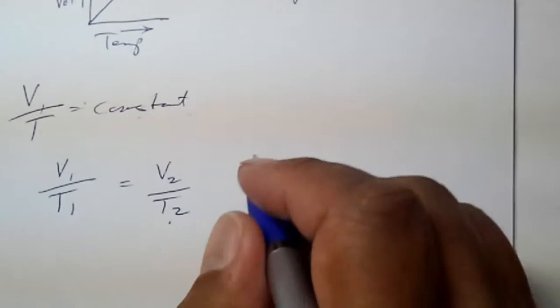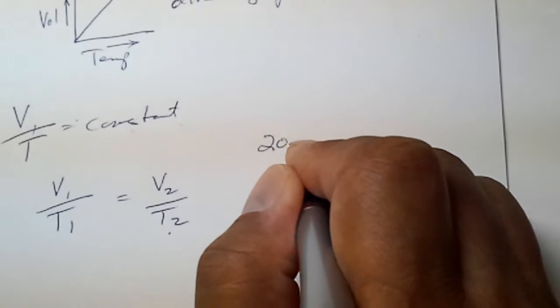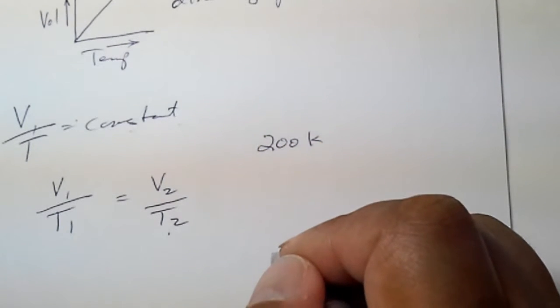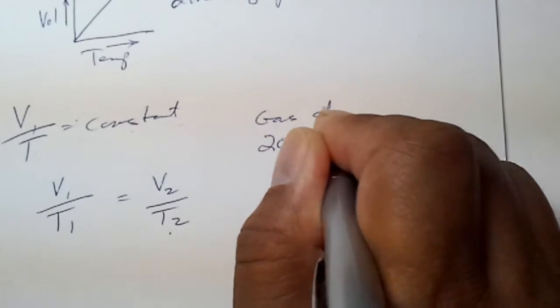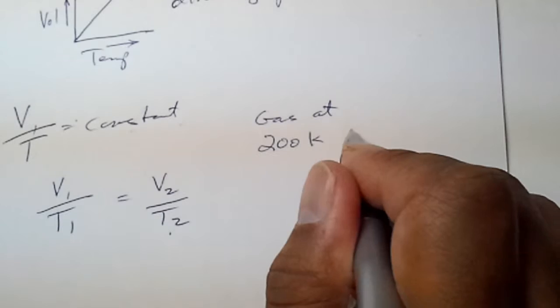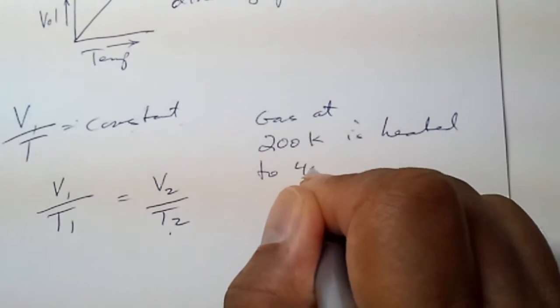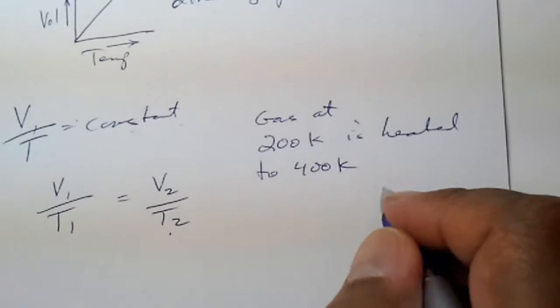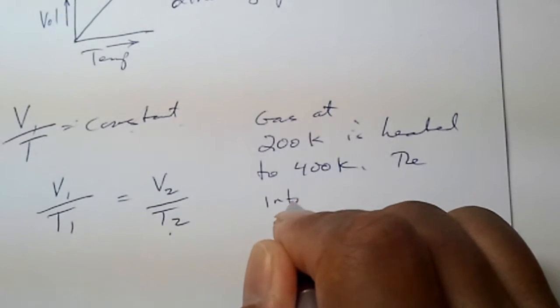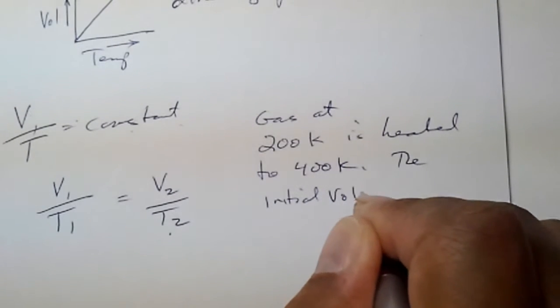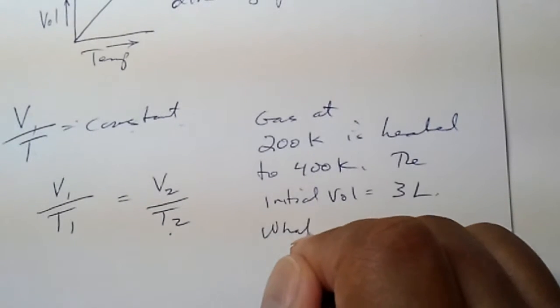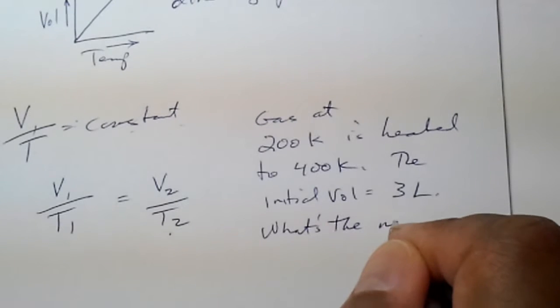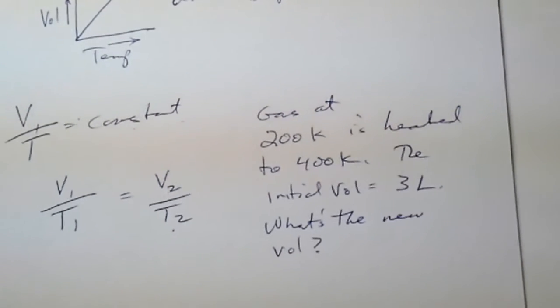As an example, 200 Kelvin is the temperature of a gas. So I'll say gas at 200 degrees Kelvin is heated to 400 degrees Kelvin. The initial volume was equal to 3 liters. What's the new volume?